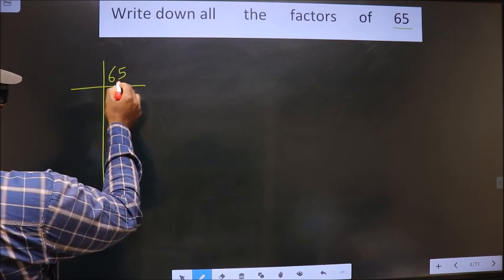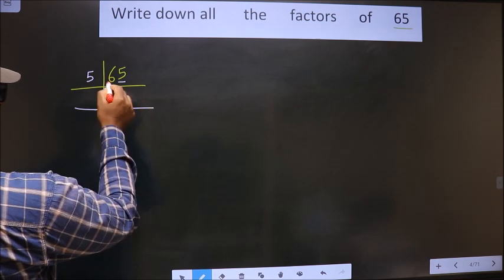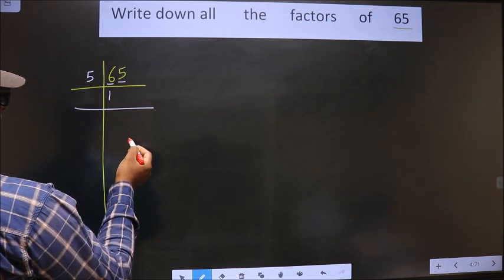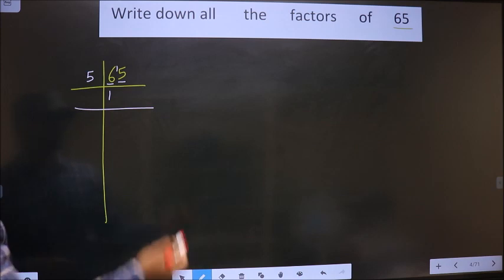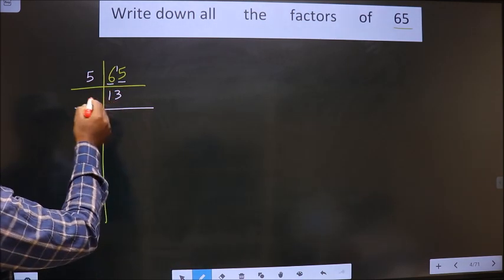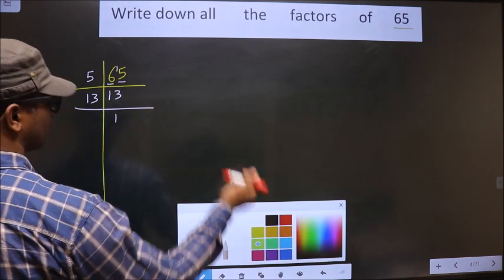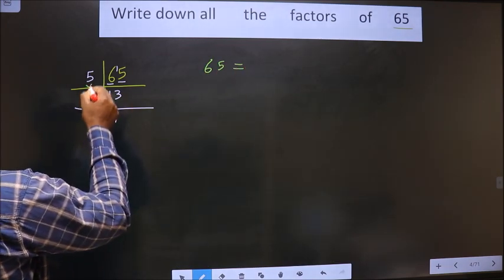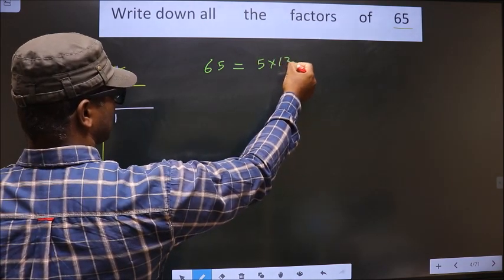For this number, the last digit is 5. So the number close to 6 in the 5 times table is 5 once 5. 6 minus 5 is 1, carried forward making it 15. 15 is 5 times 3. Now here we got 13. 13 is a prime number, so 13 and 1. So 65 is nothing but the product of these numbers — that is 5 times 13.